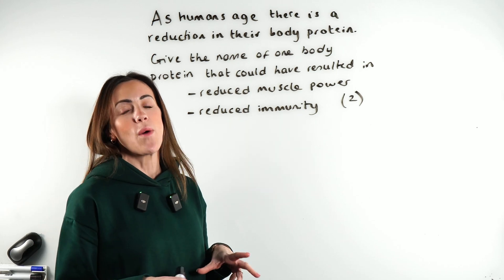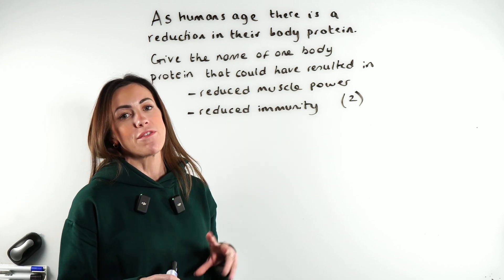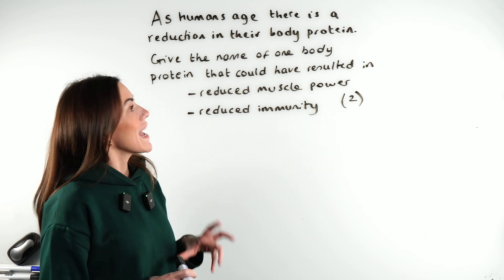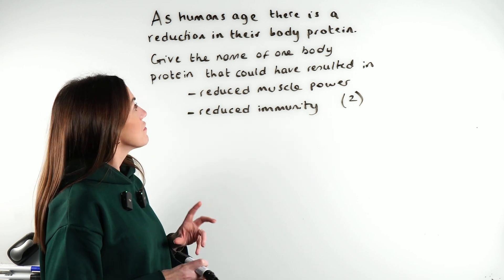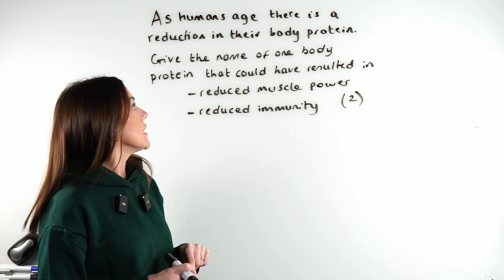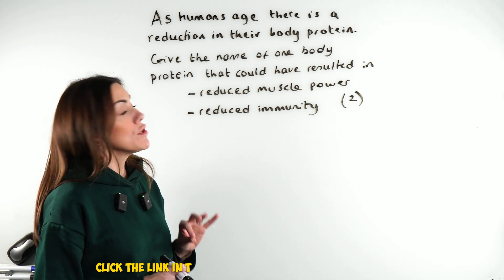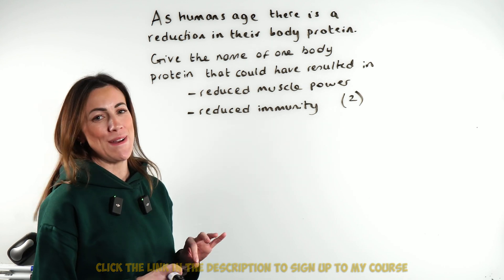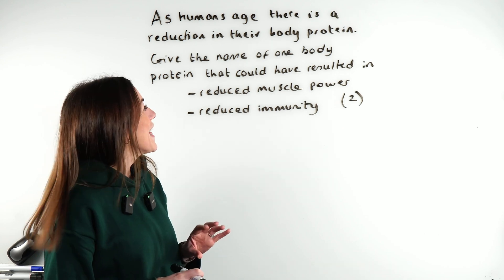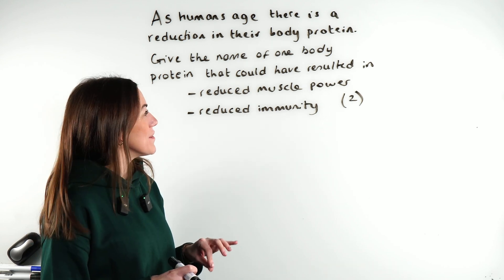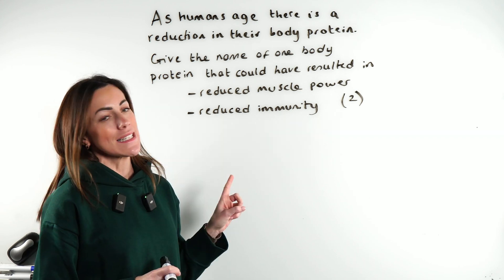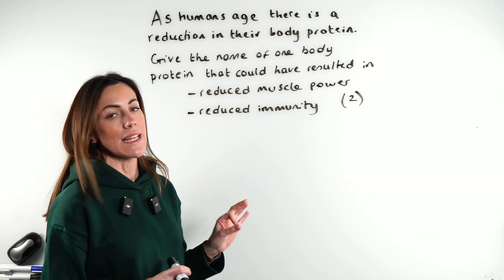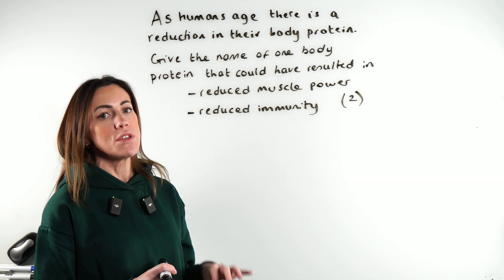Let's try this two-mark question about different proteins. As humans age, there is a reduction in their body protein, but you need to give the name of one body protein that could have resulted in firstly reduced muscle power and secondly reduced immunity.